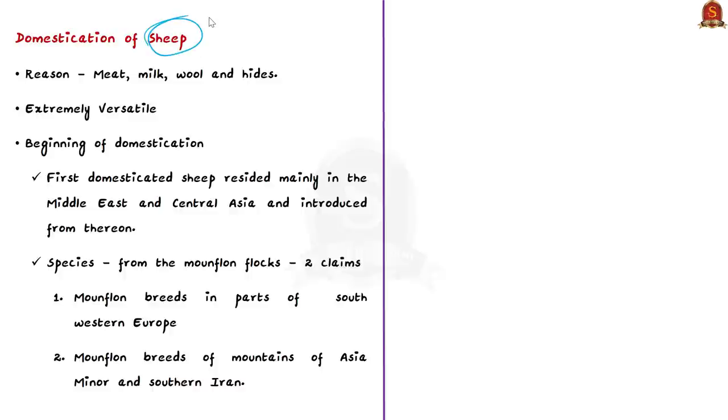Sheep is generally domesticated for meat, milk, wool and hides. Domestic sheep are extremely adaptable - they have the potential to exist in a wide variety of habitats, ranging from temperate mountain forests to desert conditions.